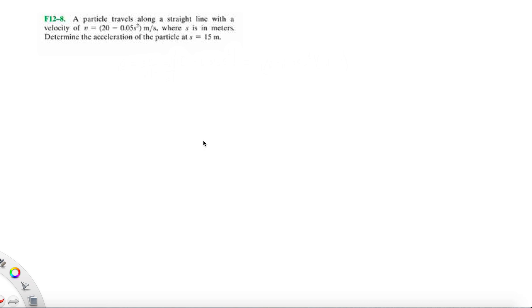We're going to be doing problem 8 from the Fundamentals of Chapter 12. So here we have a particle travels along a straight line with a velocity of v equals 20 minus 0.05 s squared meters per second.